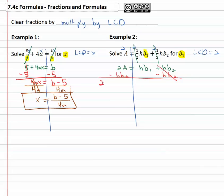Again, not like terms, so we have 2A minus hb2 equals hb1.